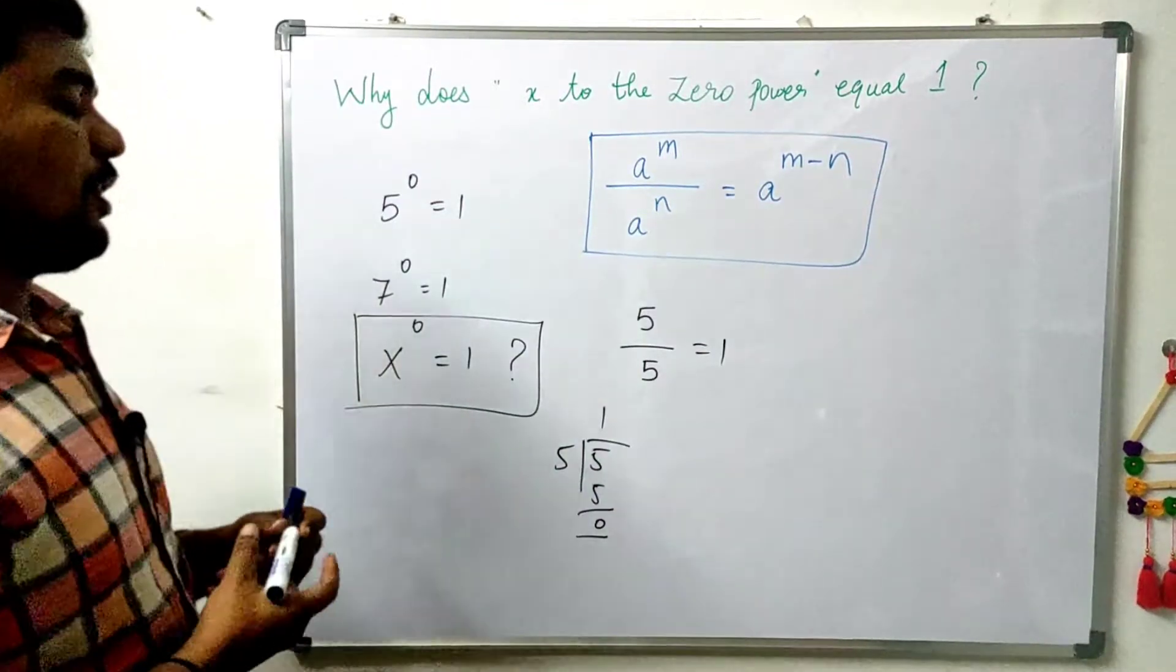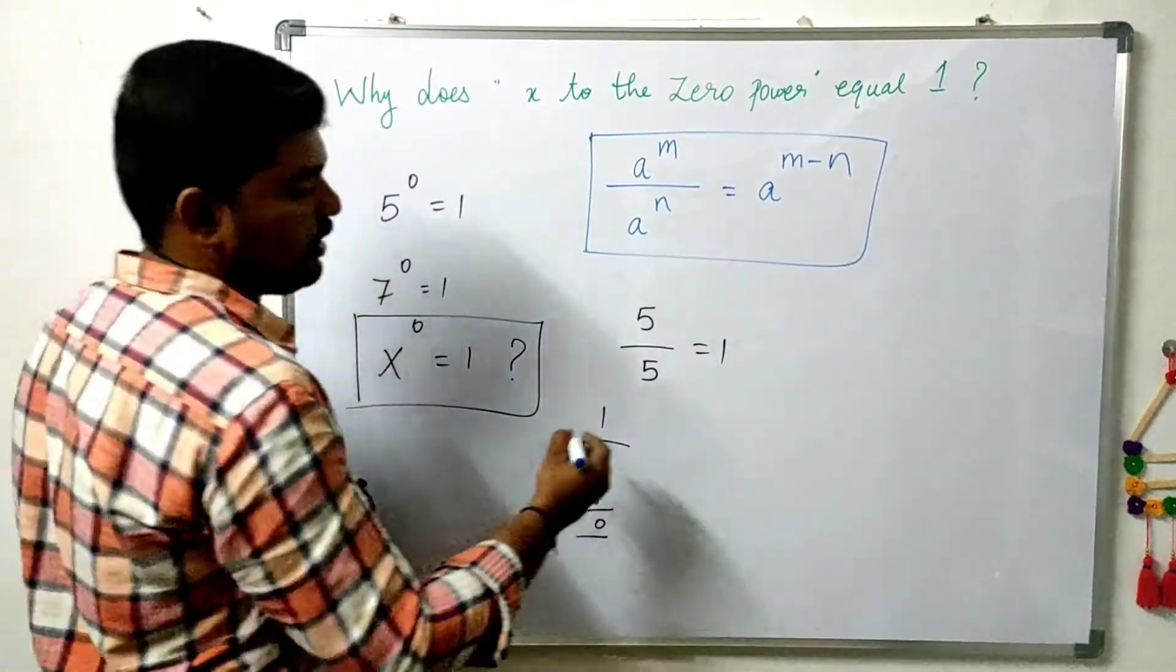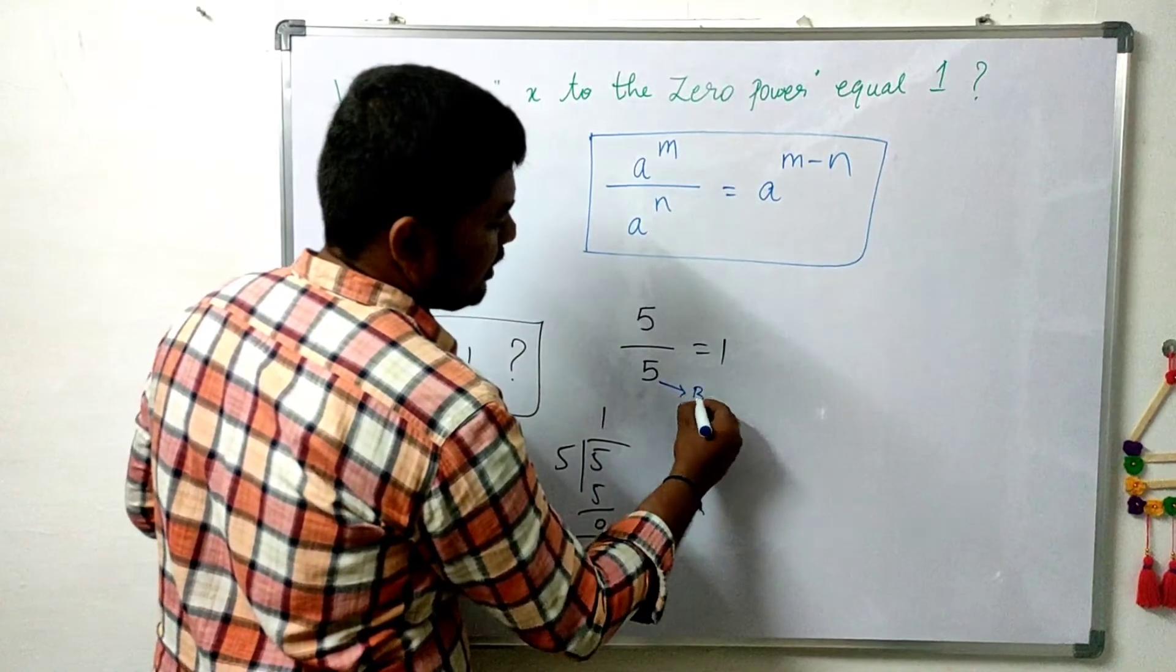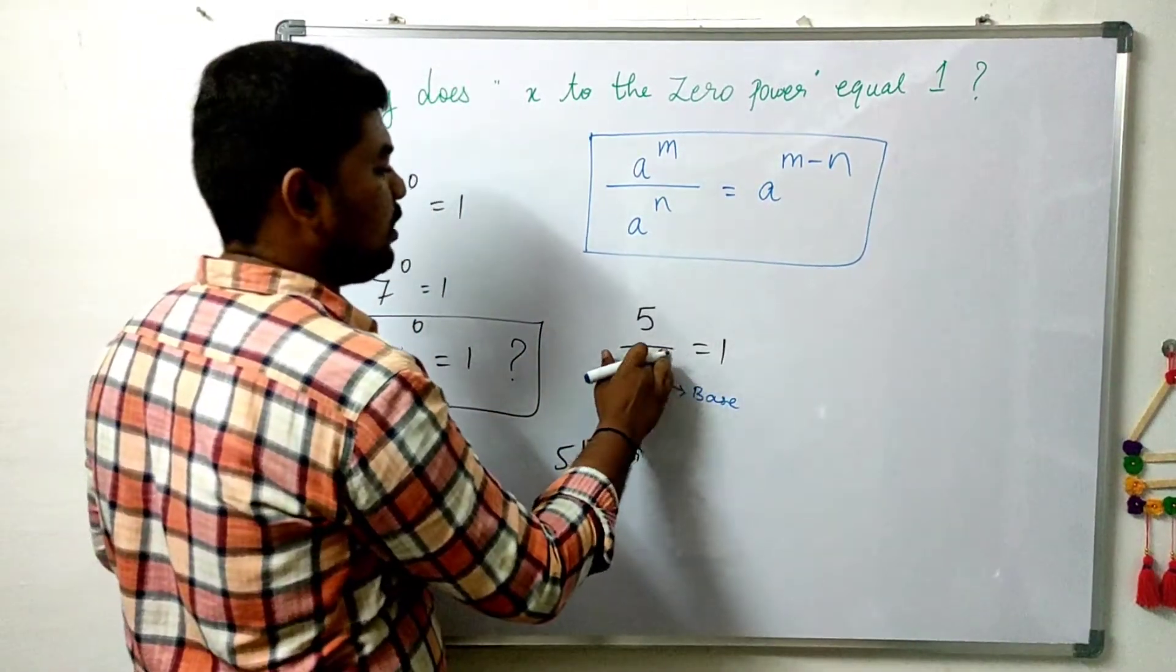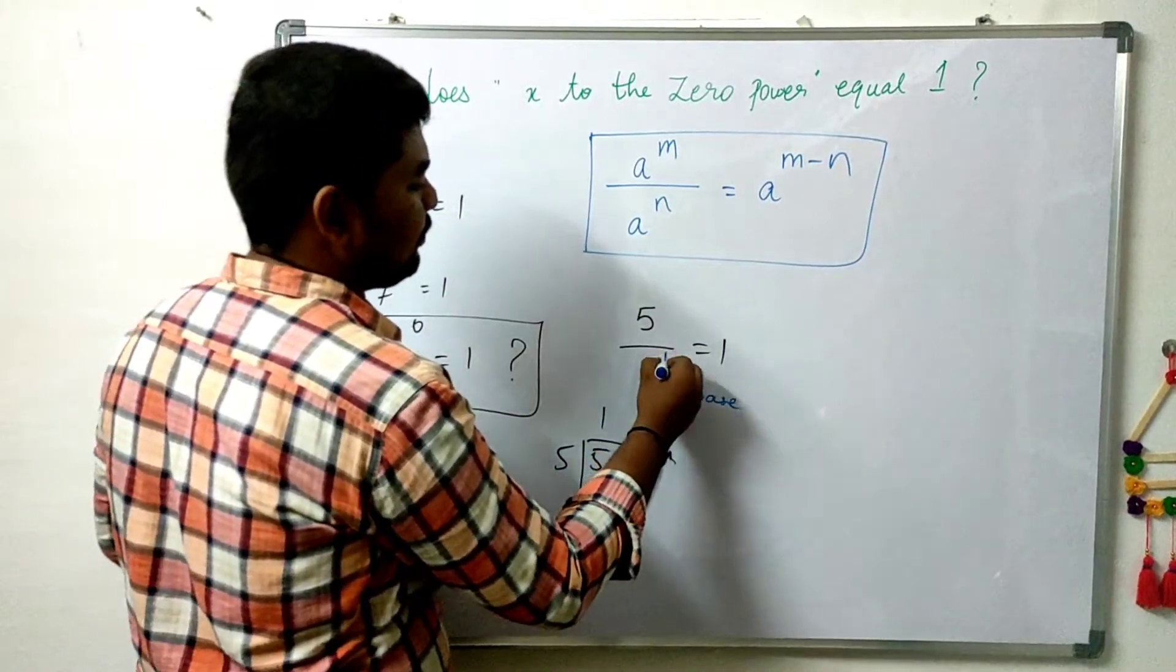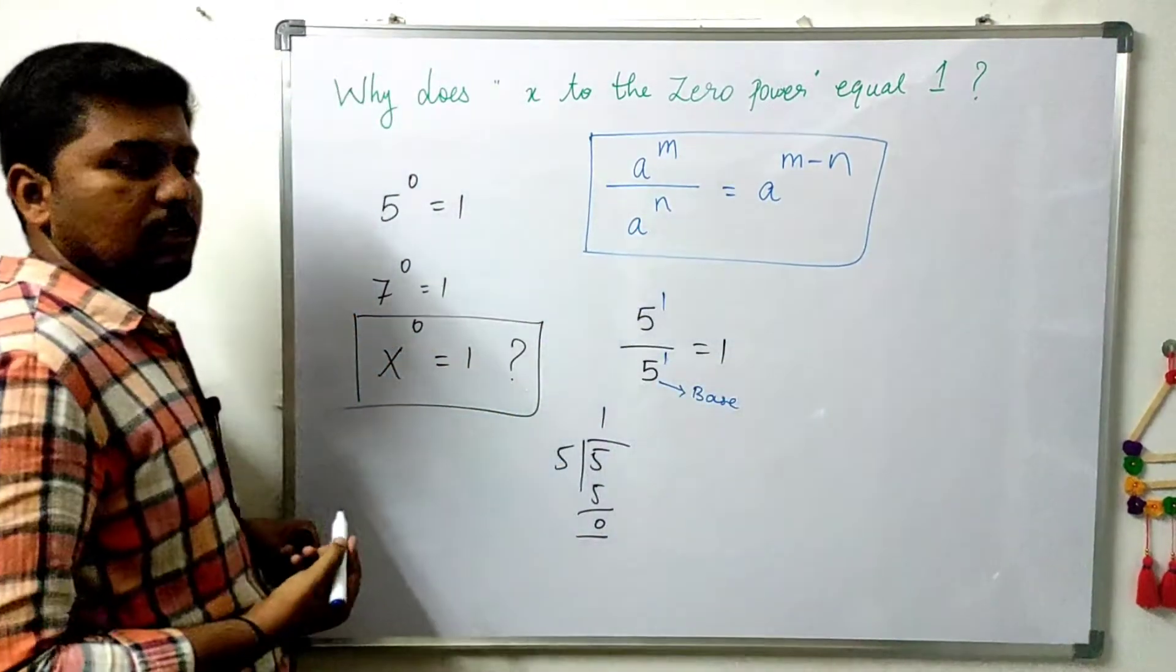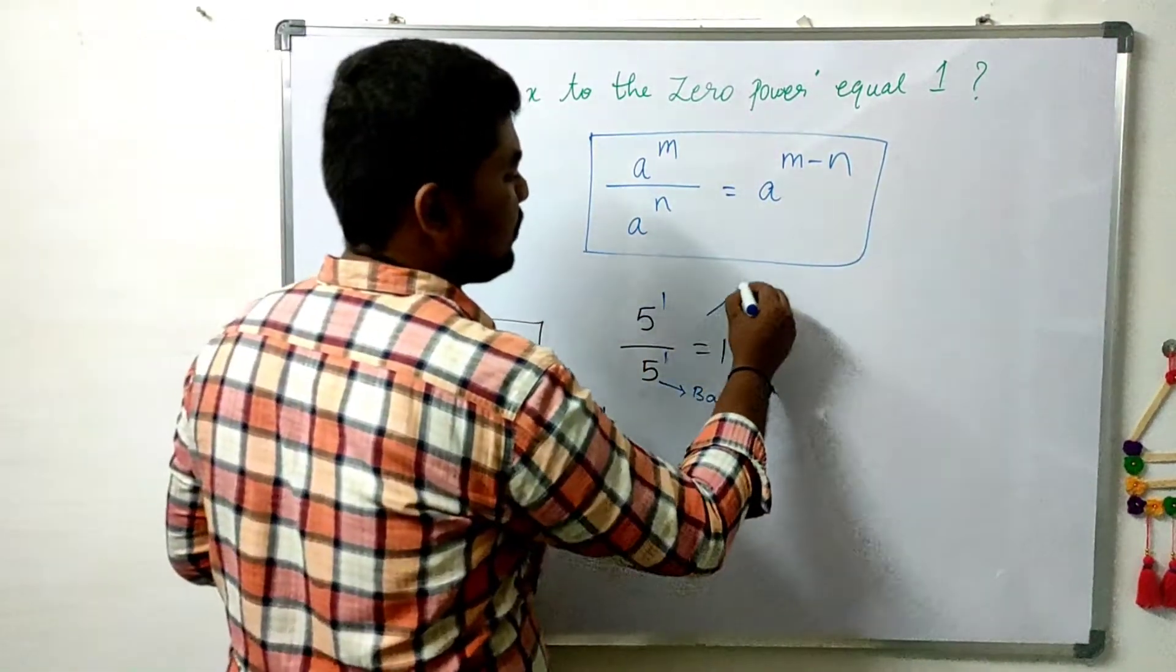What is the power of the 5? Here, 5 is a base. What is the power? Power is nothing but 1. Using the law of exponent formula, this formula.